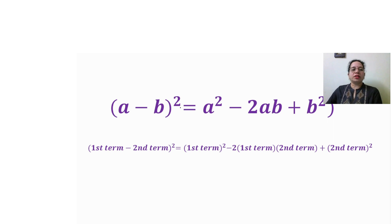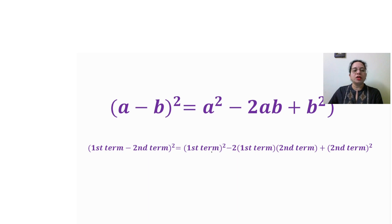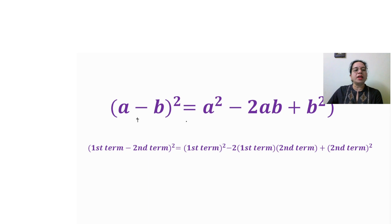Today's identity is (a minus b) whole square equals a square minus 2ab plus b square. Read it as: first term minus second term whole square equals first term whole square minus 2 into first term into second term plus second term whole square. The difference from the first identity is that when the sign is plus, the middle term is plus; when the sign is minus, the middle term is minus.